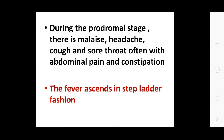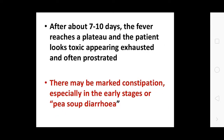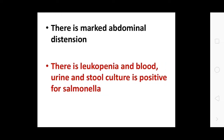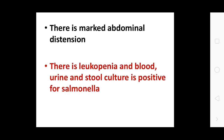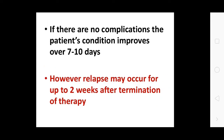The fever ascends in a step-ladder fashion. Above seven to ten days, the fever reaches its peak and the patient looks toxic. There may be marked constipation especially in early stages, or pea-soup diarrhea (watery diarrhea).